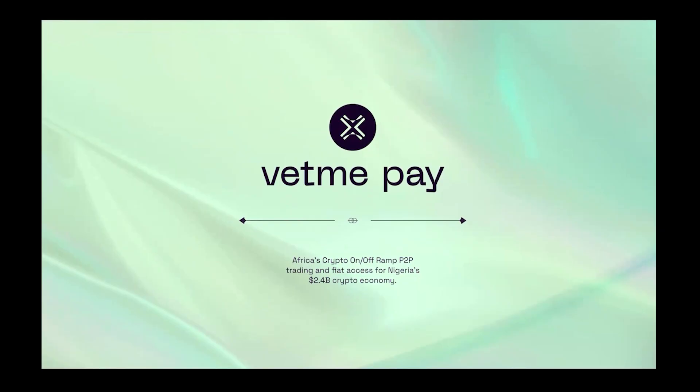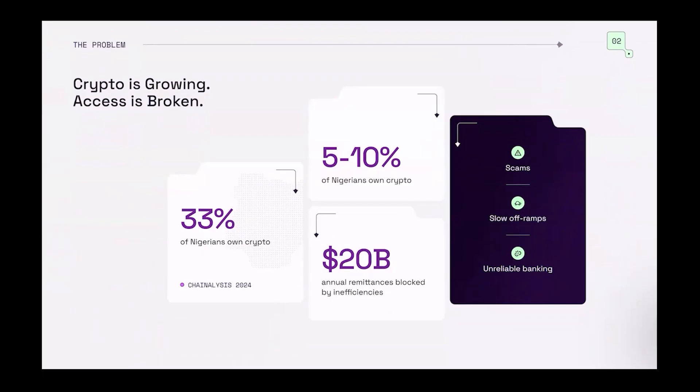So VetMe Pay — our target here is Nigeria. Nigeria and Africa have a large crypto-booming environment, and yet users still struggle with reliable on-and-off ramps and secure P2P trading. At VetMe Pay, we try our best to solve this. We are not just building another crypto exchange — we are building the infrastructure that brings crypto to real life, starting with the most active market in Africa, which is Nigeria. The problem is every day thousands of Nigerians are looking to convert between crypto and fiat but they face limited liquidity, fraud-prone platforms, and a quite difficult user experience.